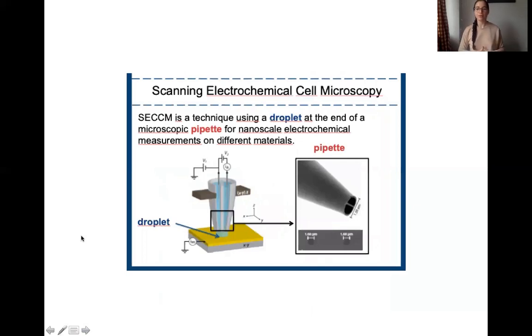To analyze our hematite, we use a method named scanning electrochemical cell microscopy. Why do we use this method? Because it allows us to get responses from our hematite at micro and nanoscale. SECCM is using a droplet at the end of a macroscopic pipette. We see here an image of the pipette getting a response from a microscopic parcel of our hematite right here.